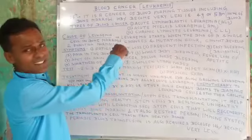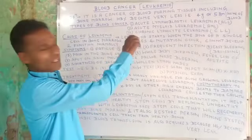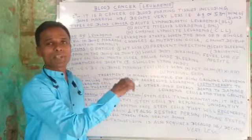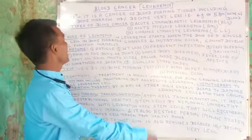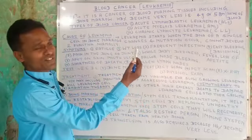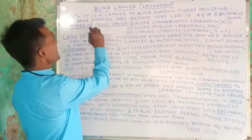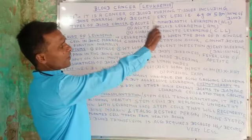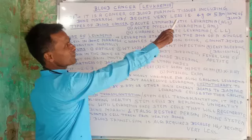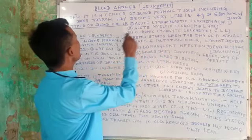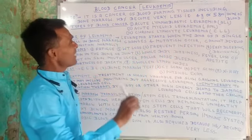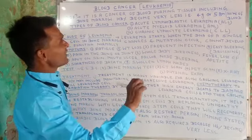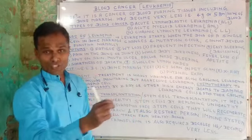Blood cancer is also called leukemia. It is a cancer of blood-forming tissues, including bone marrow. Blood cancer means abnormal blood tissue develops.